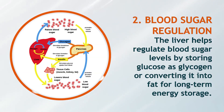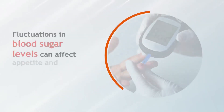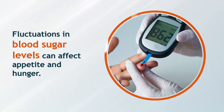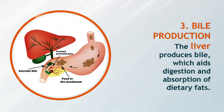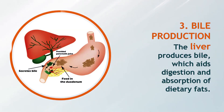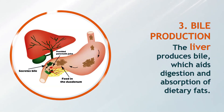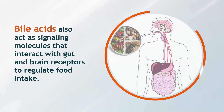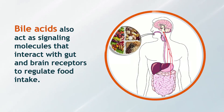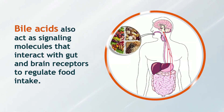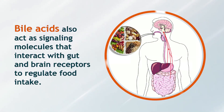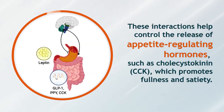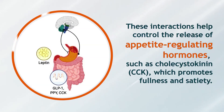The liver also helps regulate blood sugar levels by storing glucose as glycogen or converting it into fat for long-term energy storage. Fluctuations in blood sugar levels can affect appetite and hunger. Additionally, the liver produces bile, which aids in the digestion and absorption of dietary fats. Bile acids also act as signaling molecules that interact with gut and brain receptors to regulate food intake.